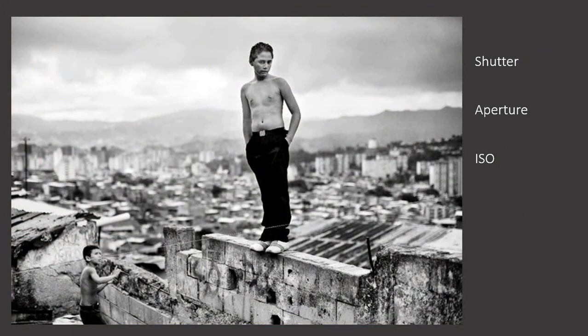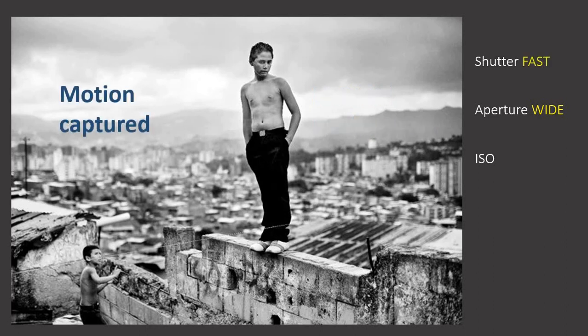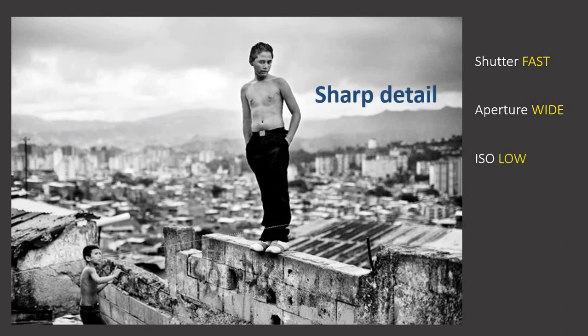This image — I went initially for the aperture because the background is clearly blurred, meaning the aperture is wide. And the opposite of a wide aperture is a fast shutter — less time to let light in, while the aperture is wide and lets lots of light in, so they balance each other out. You can also see there's a bit of motion captured here in the small child in the bottom left-hand corner mid-climb, so it's not a totally static shot. It's also relatively sharp in detail, and I'm pretty sure the ISO is low to keep as much detail as possible. Knowing this, you can go and take something similar yourself.